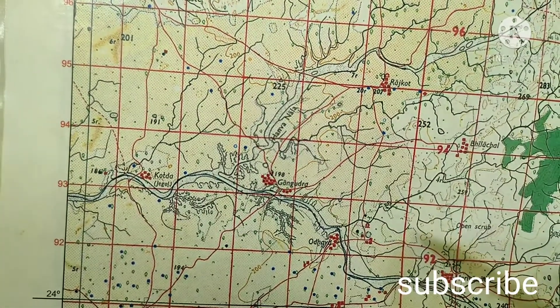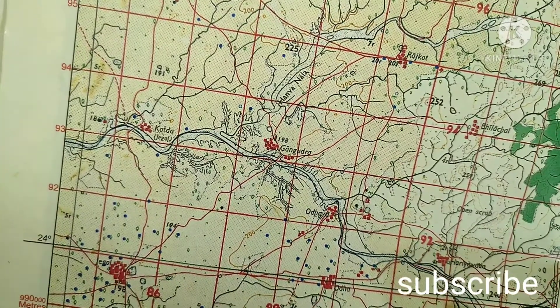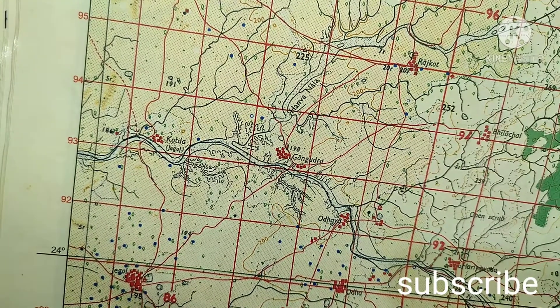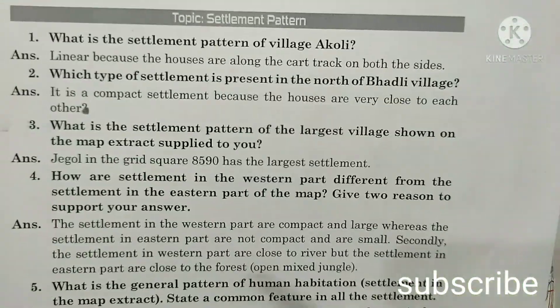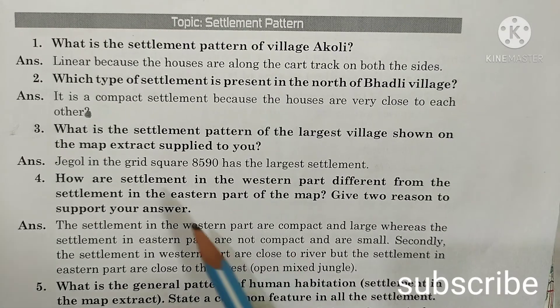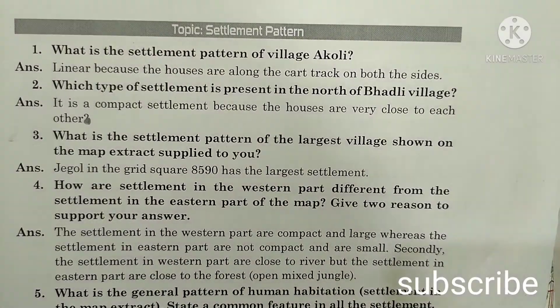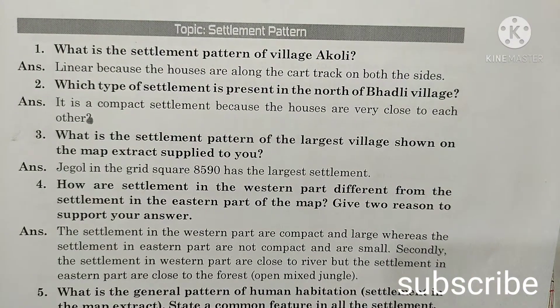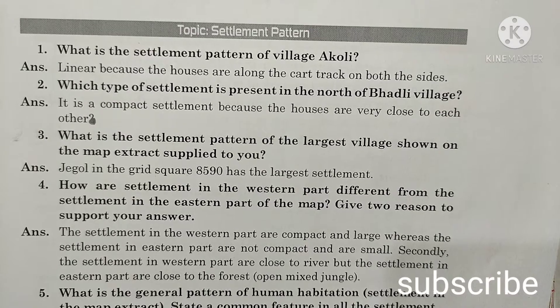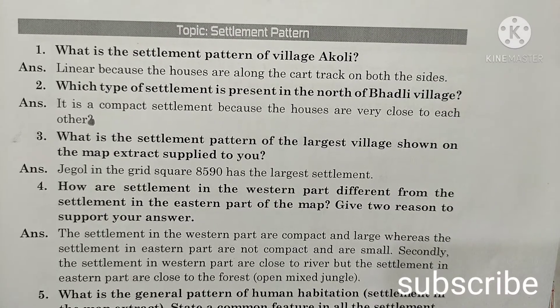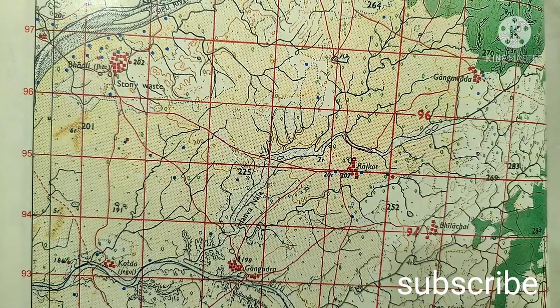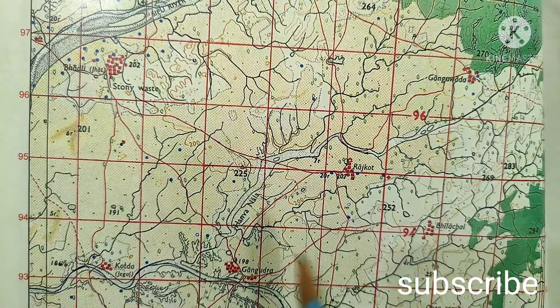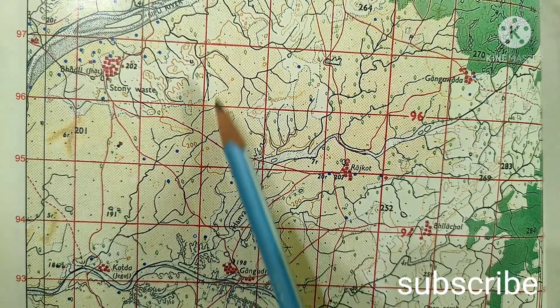You can see in the south — it is Jagol village, the largest village in the map extract. The settlement in Jagol village in grid square 85/90 has the largest settlement. Question 4: How are settlements in the western part different from settlements in the eastern part of the map? Give two reasons to support your answer. Along easting 88, we can divide it into eastern and western parts.